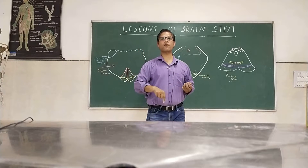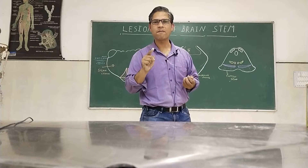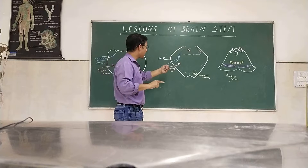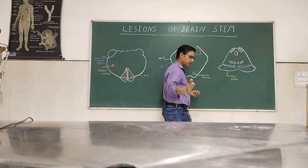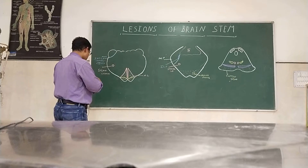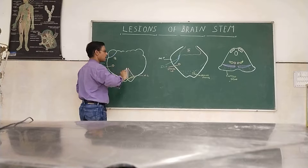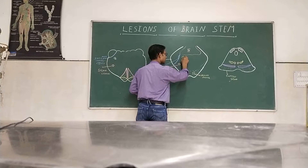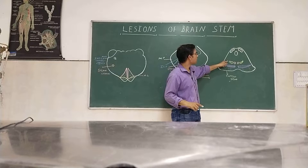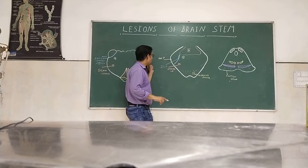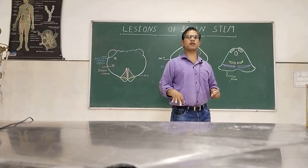The spinal lemniscus carries pain and temperature from the lower half of the body. I'm not talking about the face, because the spinal nucleus of the trigeminal nerve carries pain and temperature from the part of the face. After this, the trigeminal nucleus is present here — the trigeminal nucleus with the tract. The ventral aspect crosses forming the trigeminal lemniscus, where the first fibers of the trigeminal ganglion are.